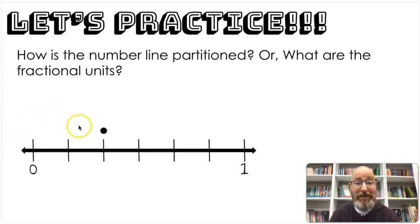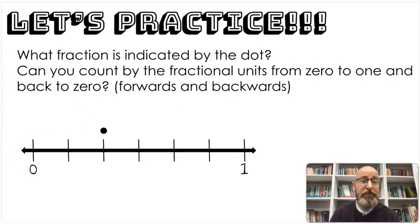Let's do it together. One, two, three, four, five, six. So it's partitioned how many ways? Six. And the fractional units would be what? What would we be counting by? Sixths. That's correct. So what fraction is indicated by the dot? If we're counting by six, how would I count? We would have it what? One-sixth? Two-sixths. So that dot is where? Two-sixths.